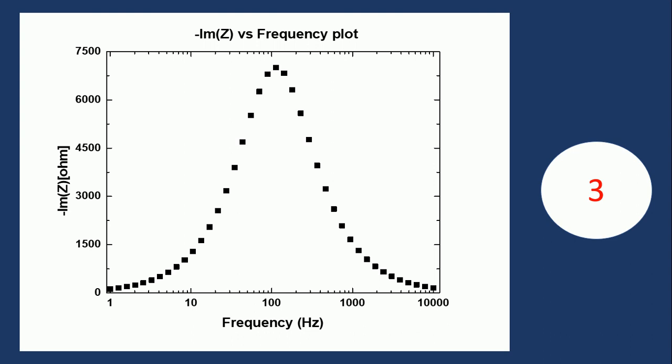Another way is to plot the minus imaginary part along the y-axis and frequency along the x-axis, again with the frequency scale in log scale. Here the maximum peak corresponds to around 100 Hz, and the value of the imaginary part at 100 Hz is around 7,000 — consistent with the semicircle graph. So we have seen the Nyquist plot and can also represent the data in these different ways.